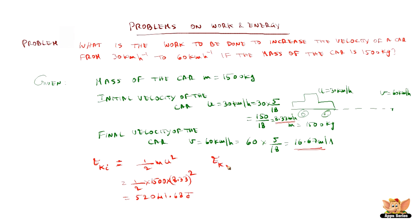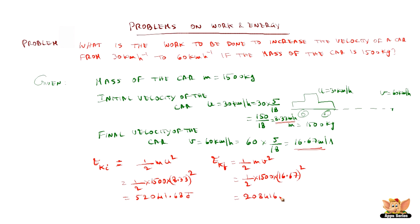Now we will find the final kinetic energy using the final velocity. It is half m v squared, so m is 1500 and v is 16.67 squared. On computation and calculation, we get 208416.68 joules as the final kinetic energy.